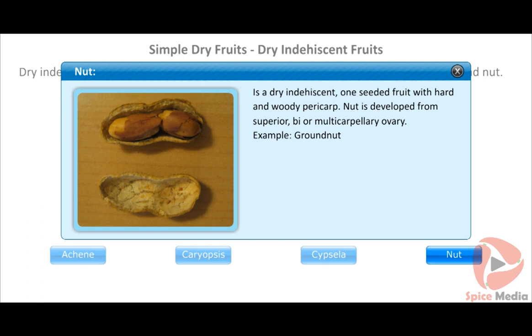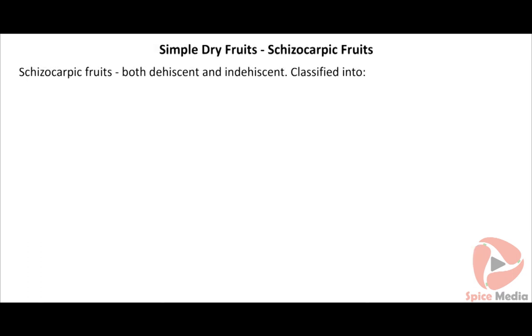The nut is a dry indehiscent one-seeded fruit with a hard and woody pericarp. It develops from a superior bi- or multi-carpellary ovary. Example: groundnut.